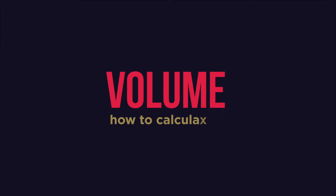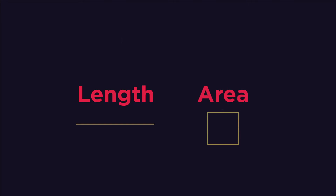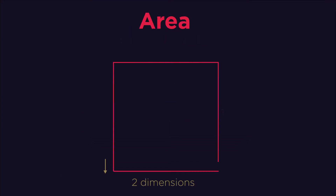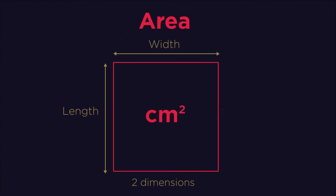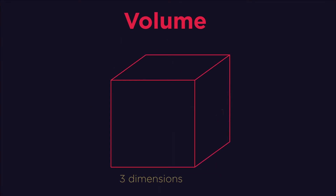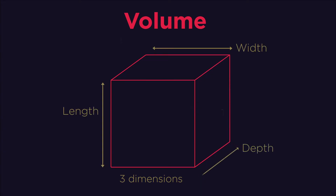In this video we're going to learn about volume and how to calculate it. To start, let's talk about length and area. Length measures across one dimension and is usually measured in centimeters or meters. Area measures across two dimensions — the length and the width — and so is measured in centimeters squared or meters squared. Volume is measured across three dimensions: the length, width, and depth, and so is usually measured in centimeters cubed or meters cubed.